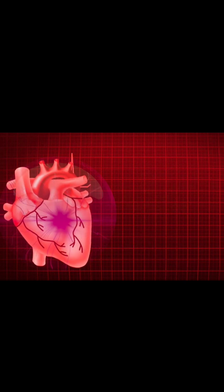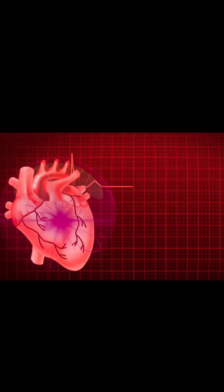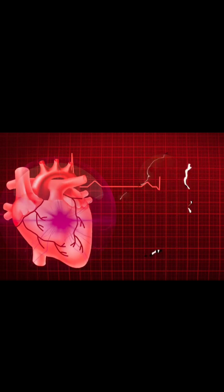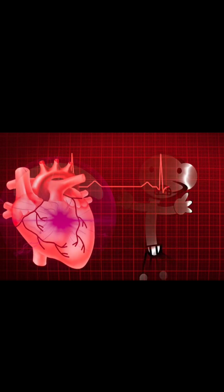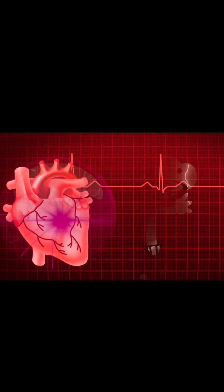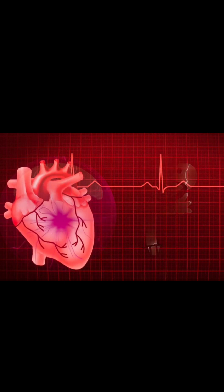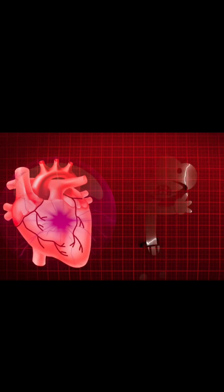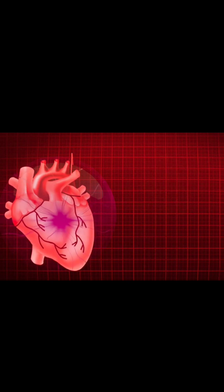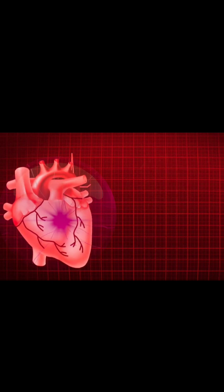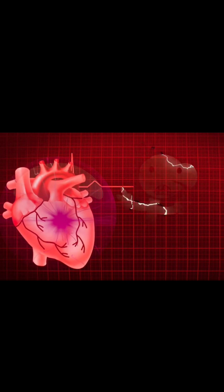Area supplied by the LCA: left atrium, most of the left ventricle, part of the right ventricle, the interventricular septum — anterior two-thirds — and the SA node in 40% of people.